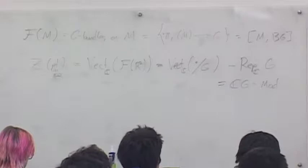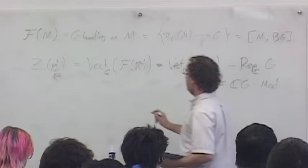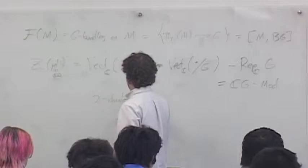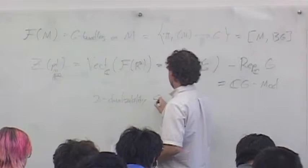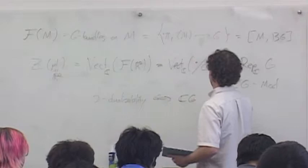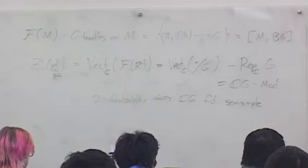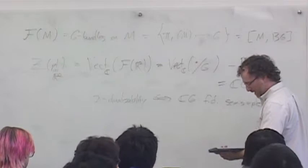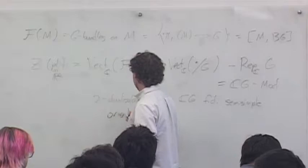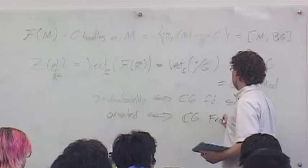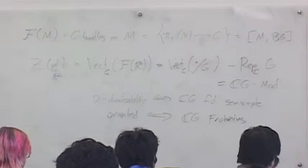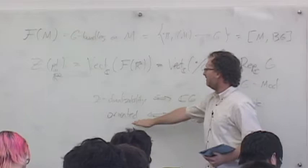The group algebra is the non-commutative algebra of functions on G with convolution. And actually, we heard yesterday from André a version of the statement that two-dualizability — the fact that this category defines a 2D field theory — is equivalent in this setting to saying that the algebra is finite-dimensional semisimple. Maybe better to say separable if I weren't over ℂ, but I am over ℂ, so I will say semisimple. And to make this an oriented field theory, we give ℂ[G] the extra structure of a Frobenius algebra — give it an invariant trace. The group algebra has a trace of the evaluation of the identity, and that makes this a Frobenius algebra.